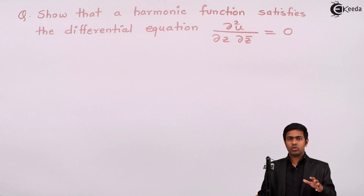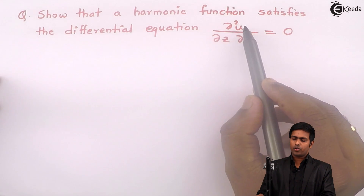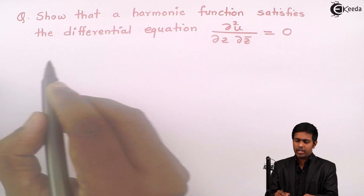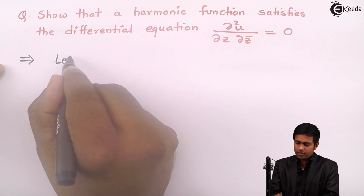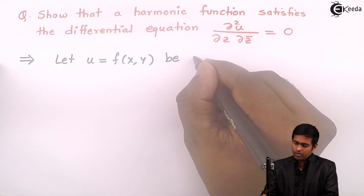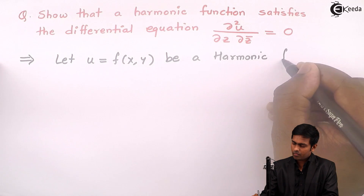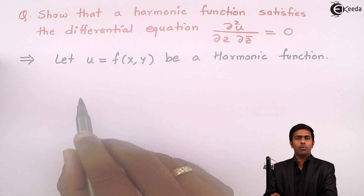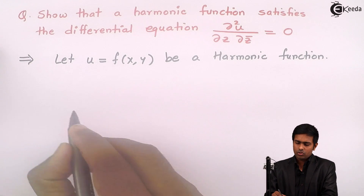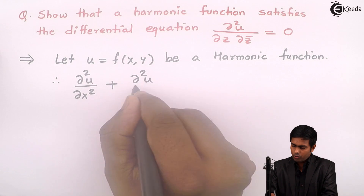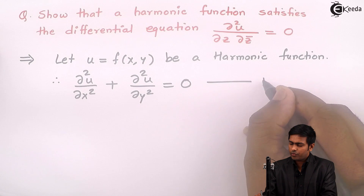Since we have to show that the harmonic function satisfies this differential equation, u is our harmonic function. Let u, which is a function of x and y, be a harmonic function. Since it is harmonic, we know that the harmonic function satisfies the Laplace equation. Therefore, ∂²u/∂x² + ∂²u/∂y² = 0. This is equation number 1.